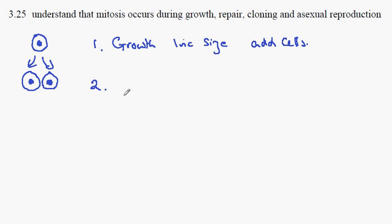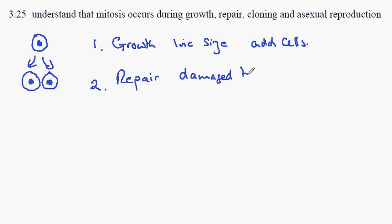A second way in which mitosis is functioning is in repair — specifically the repair of damaged tissue. With cells damaged or dead, it's possible for new cells to be added to replace the damaged cells.